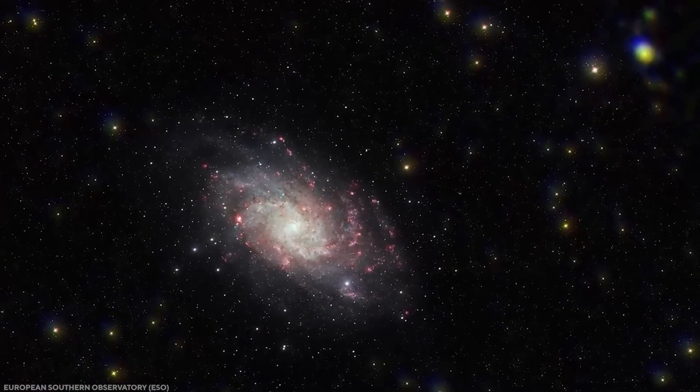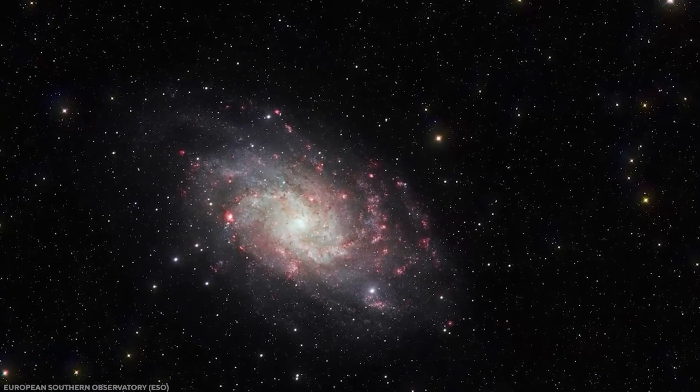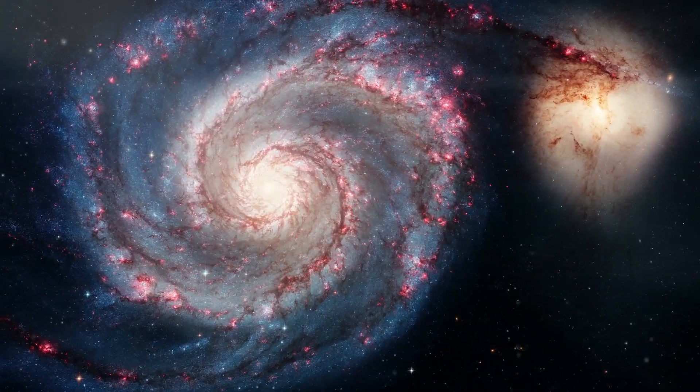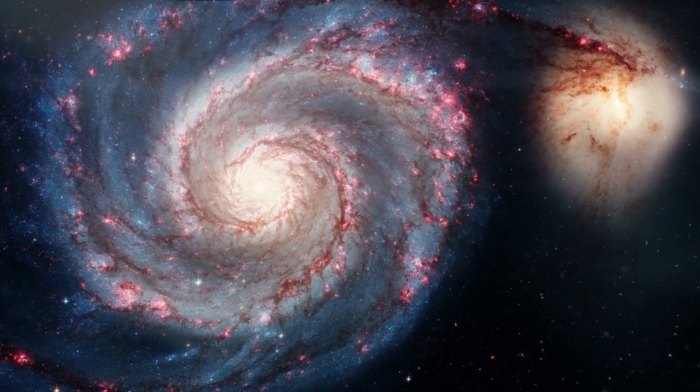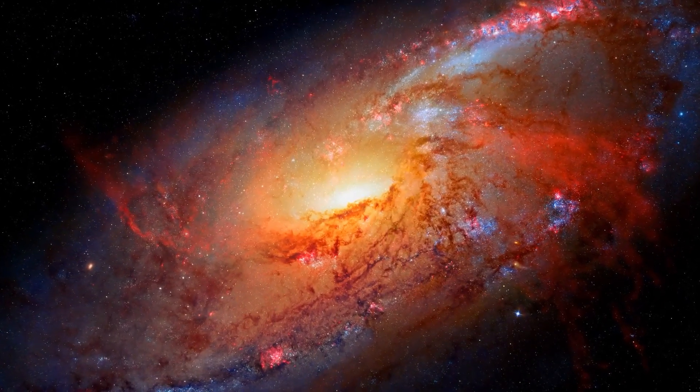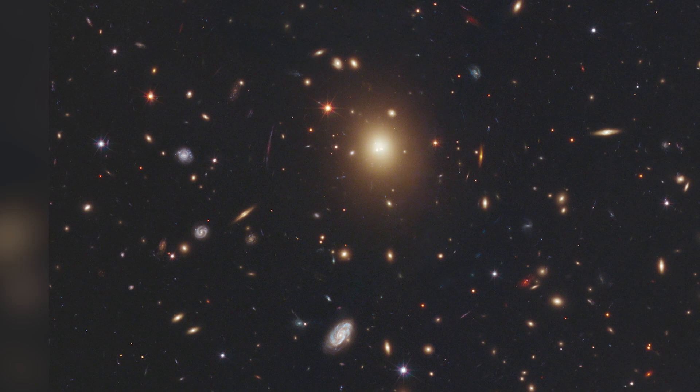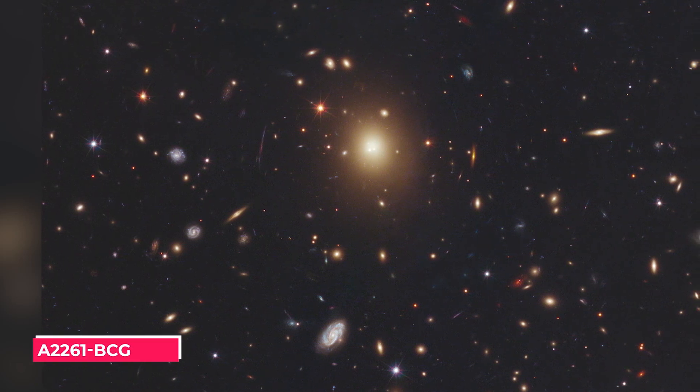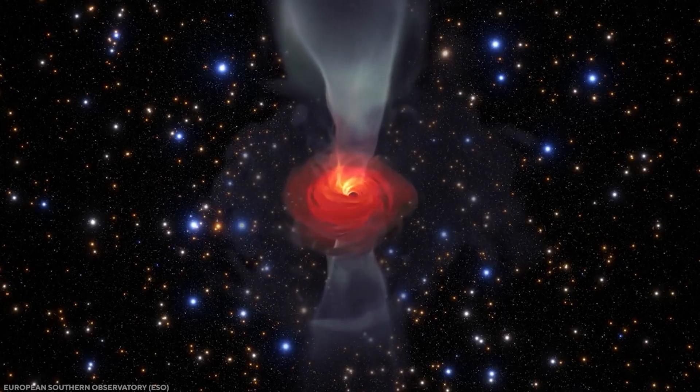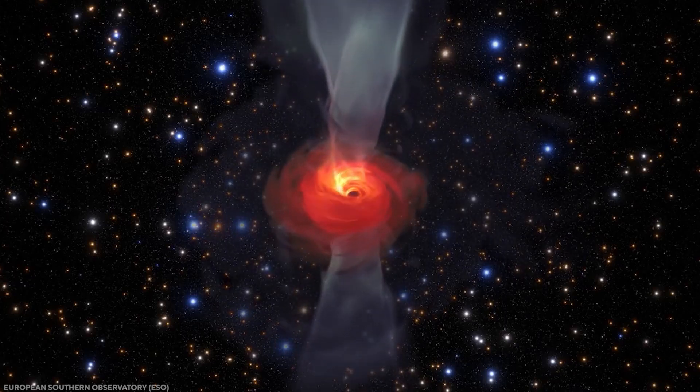While Triangulum is a medium-sized galaxy, about one-third of the size of the Milky Way, most with no supermassive black hole are dwarf galaxies. That is not to say a large galaxy never occurs. For example, the supergiant elliptical galaxy A2261-BCG has also been found to have no supermassive black hole.